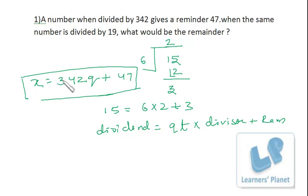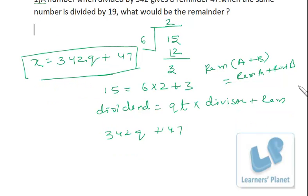Next, when this number is divided by 19, what would be the remainder? Now 342q + 47 when divided by 19. The remainder of A + B equals remainder of A plus remainder of B. So I can find the overall remainder by dividing the individual terms.